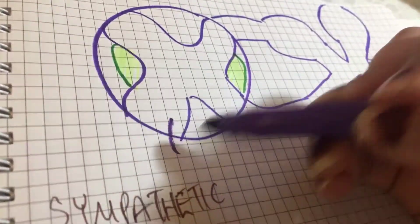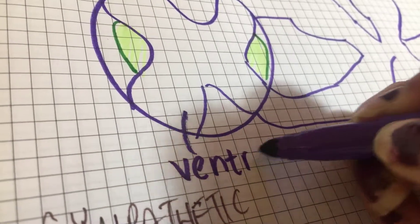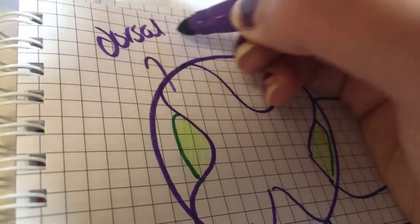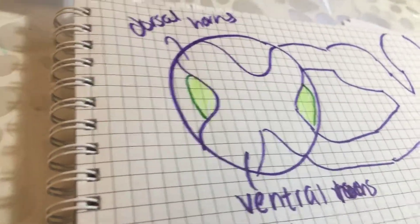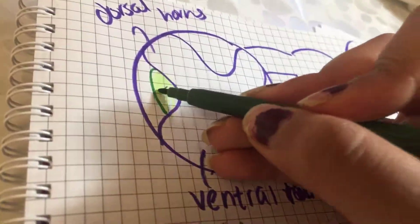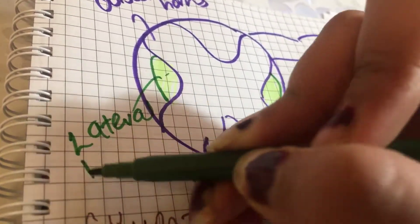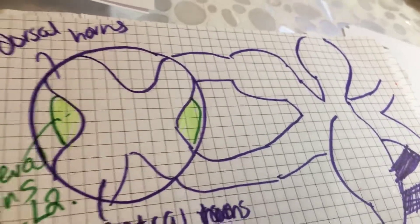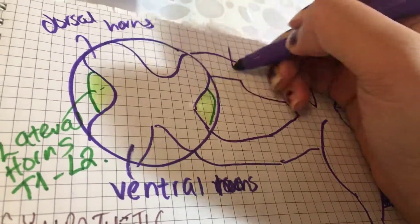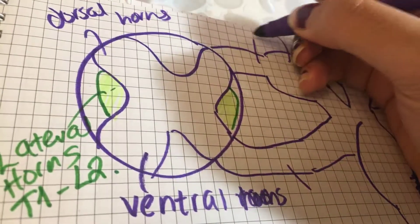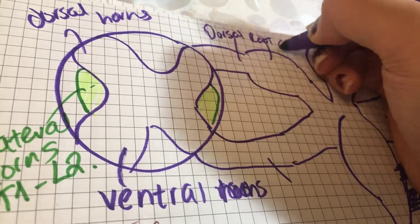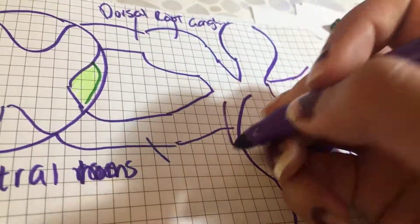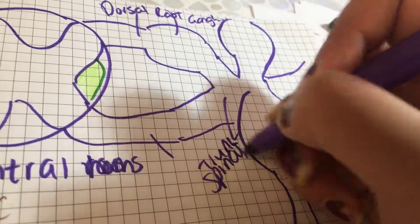So here you have your ventral roots, horns, here you have your dorsal horns, here we have our lateral horns, which tells me that this vertebra is between T1 and L2. Then here we have our dorsal root, ventral root, here's our dorsal root ganglia. They combine to form the spinal trunk, trunk of spinal nerve.